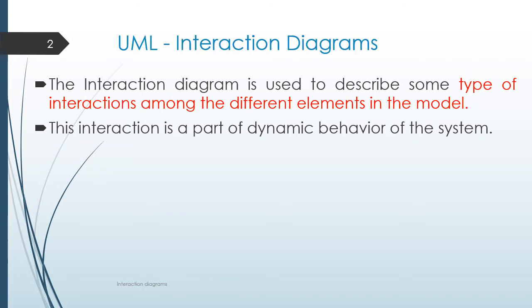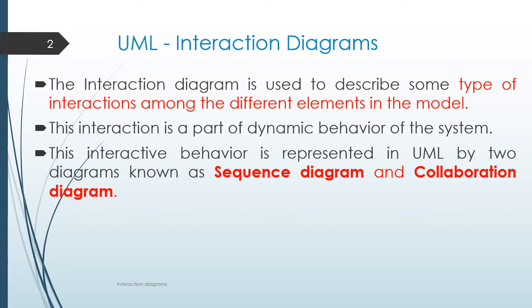In other words, interaction diagram plots the dynamic behavior of the system, and the interactive behavior is represented in UML by two diagrams: sequence diagram and collaboration diagram.